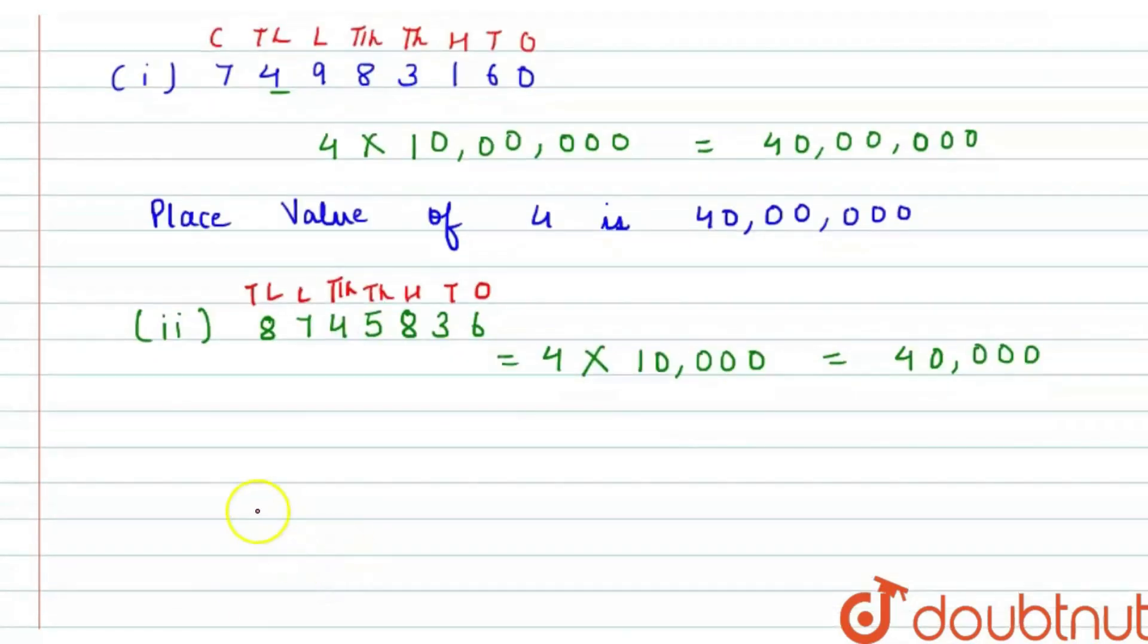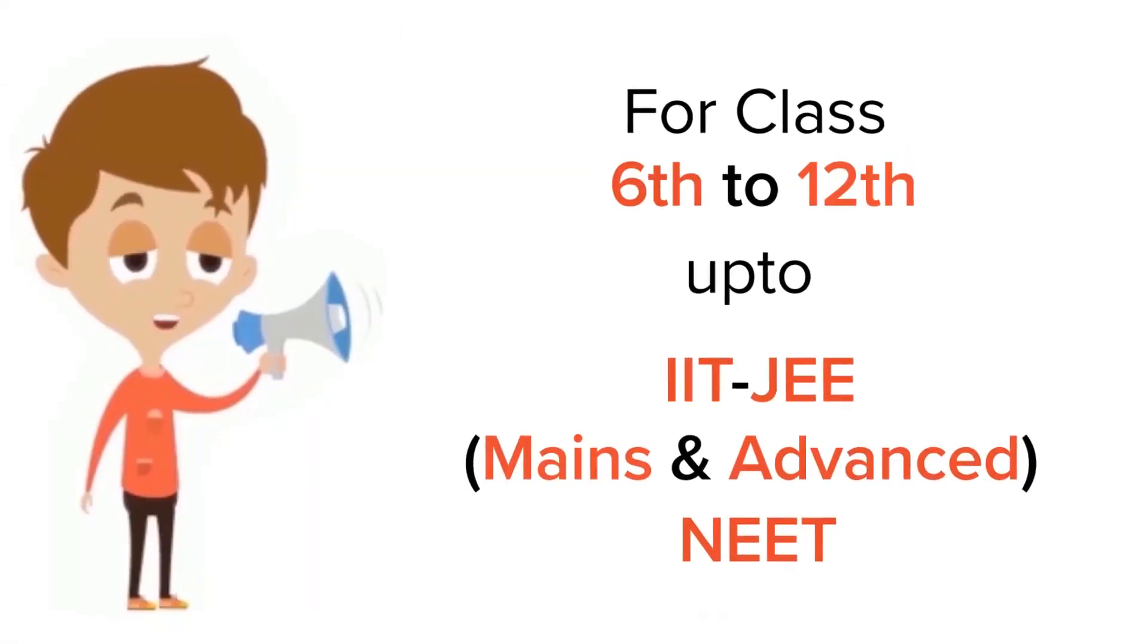So therefore we can write that place value of 4 is 40000. So I hope it is clear, thank you.